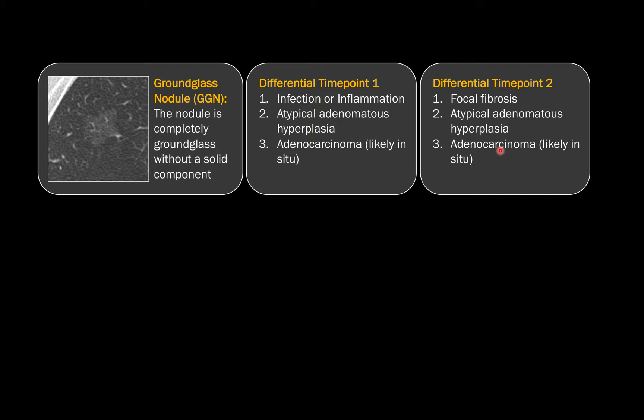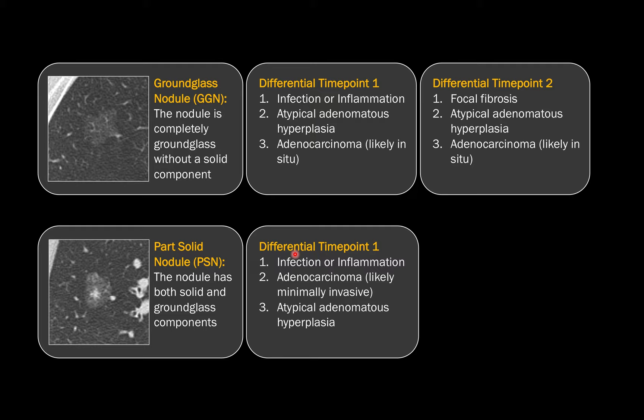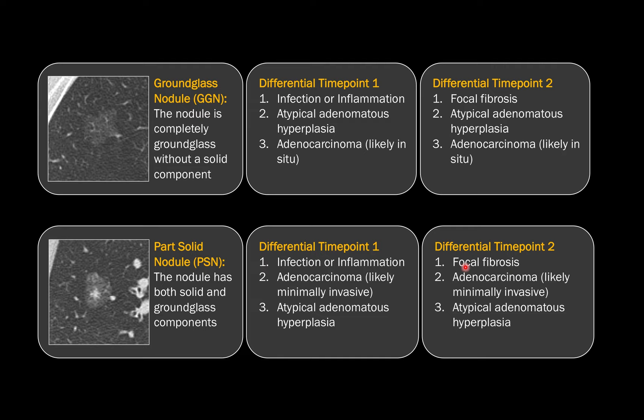For a part-solid lesion at the first time point, I would include infection or inflammation, move adenocarcinoma — likely minimally invasive — to number two, and list atypical adenomatous hyperplasia third, since the solid component could represent mucus plugging or atelectasis rather than true invasion. At the second time point, I remove infection or inflammation, add focal fibrosis, and keep adenocarcinoma and atypical adenomatous hyperplasia.